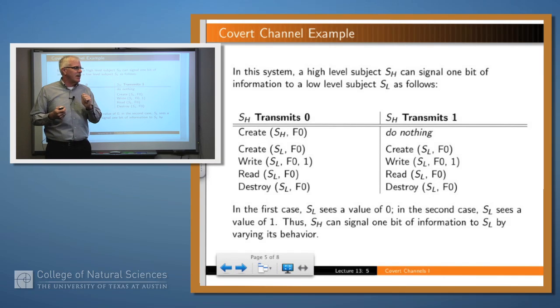Let's look at the other side of this chart. In that case, the high-level subject didn't do anything. He didn't try to create the object. And so when the low-level subject tries to create, his create succeeds, he writes a value to that object at his level. He reads the value back and sees a 1.